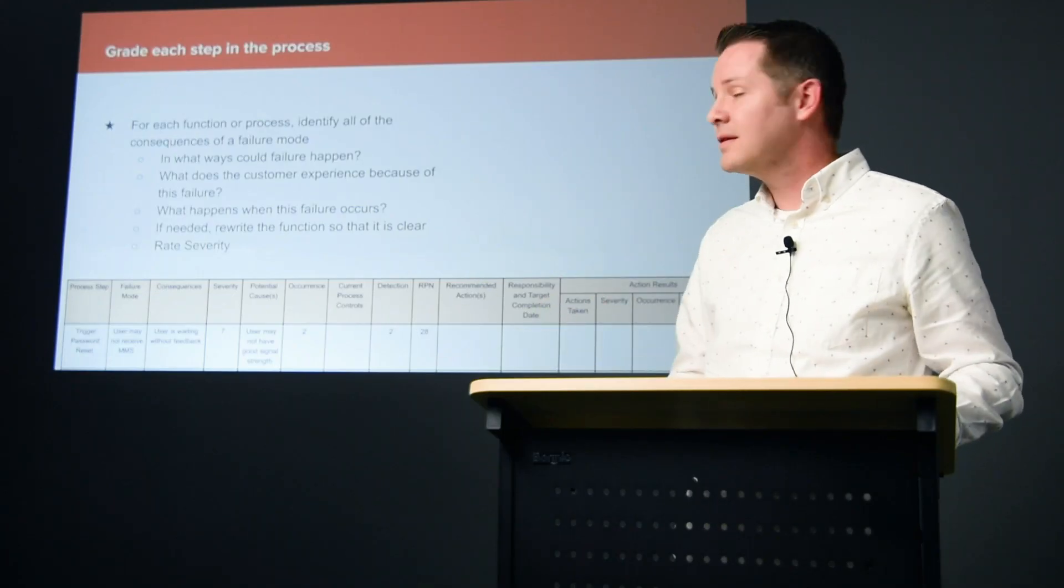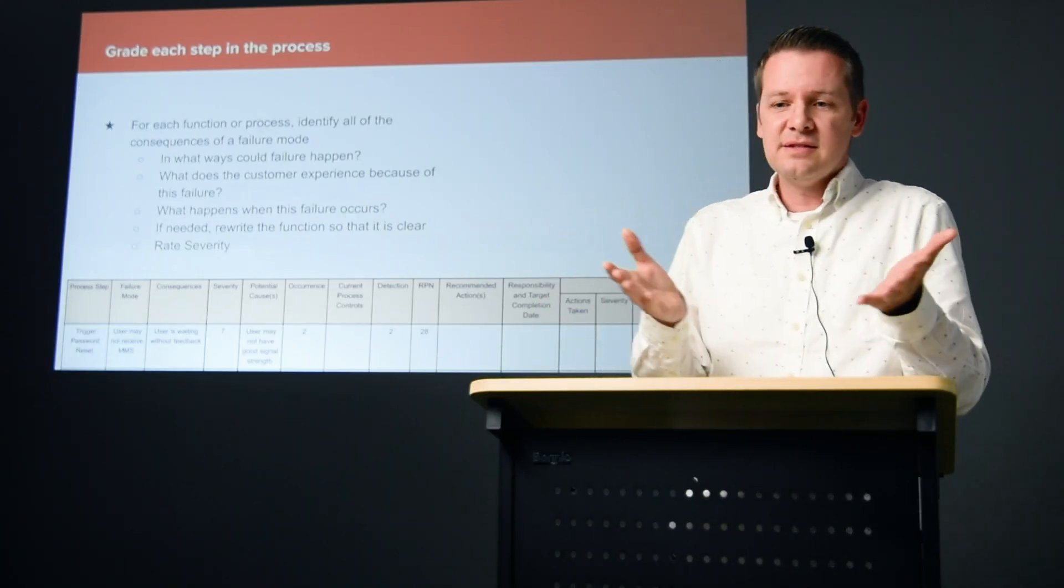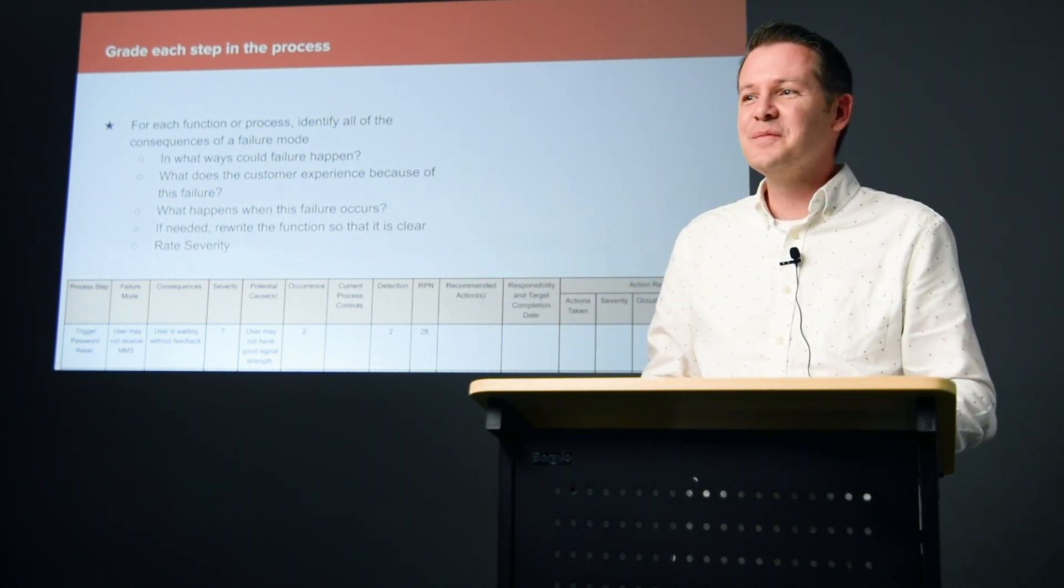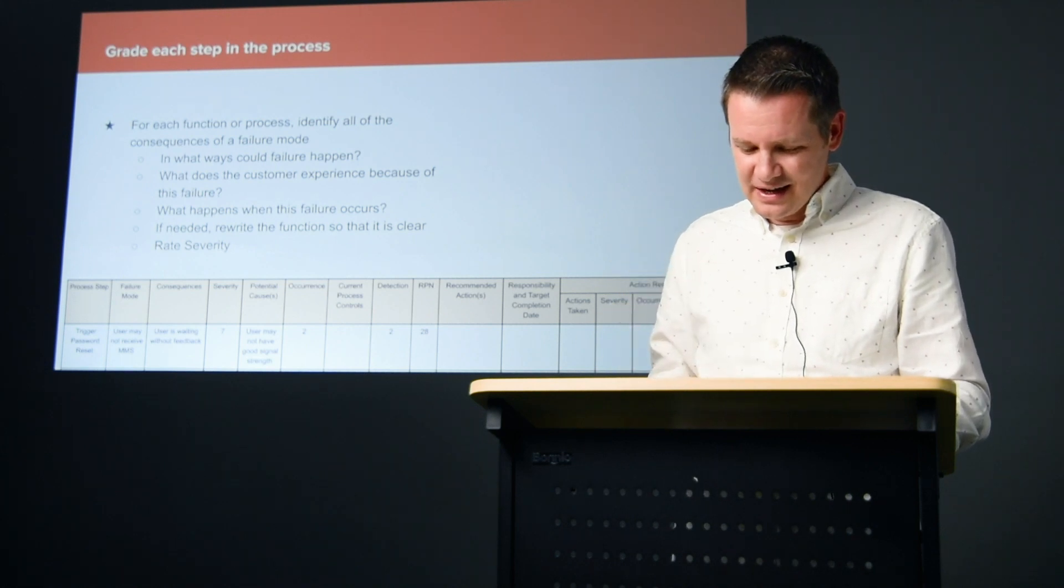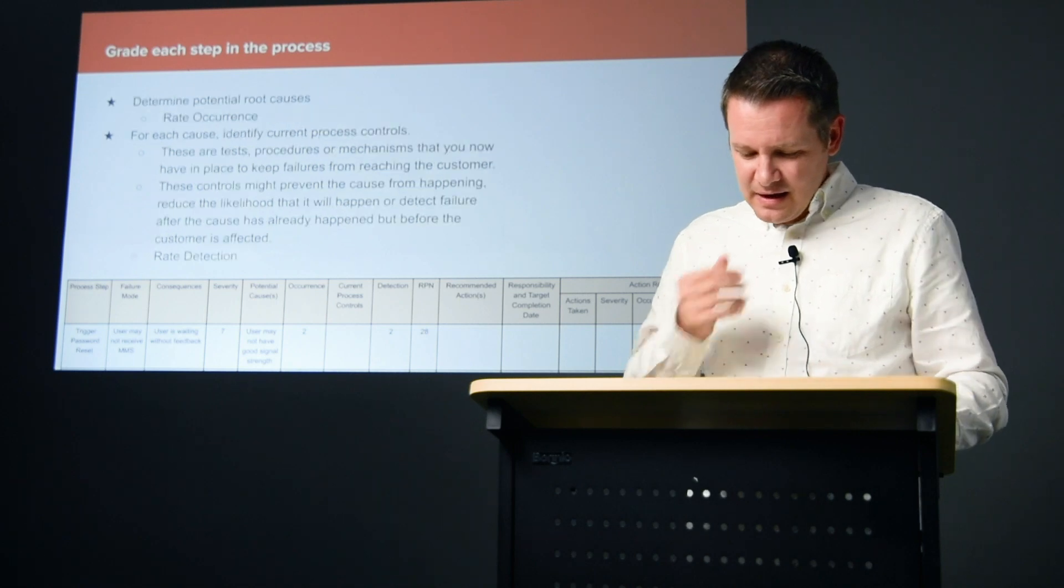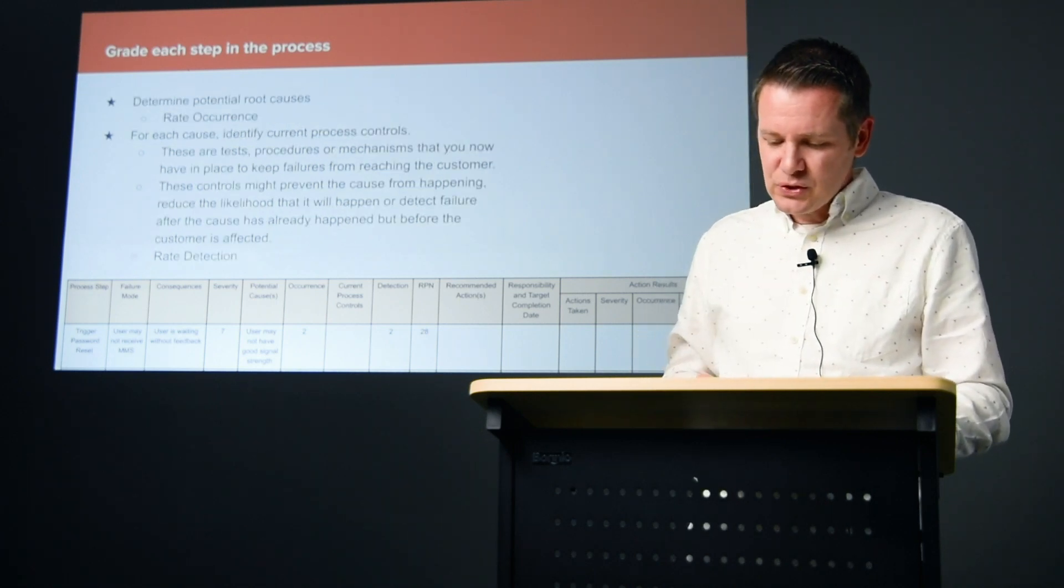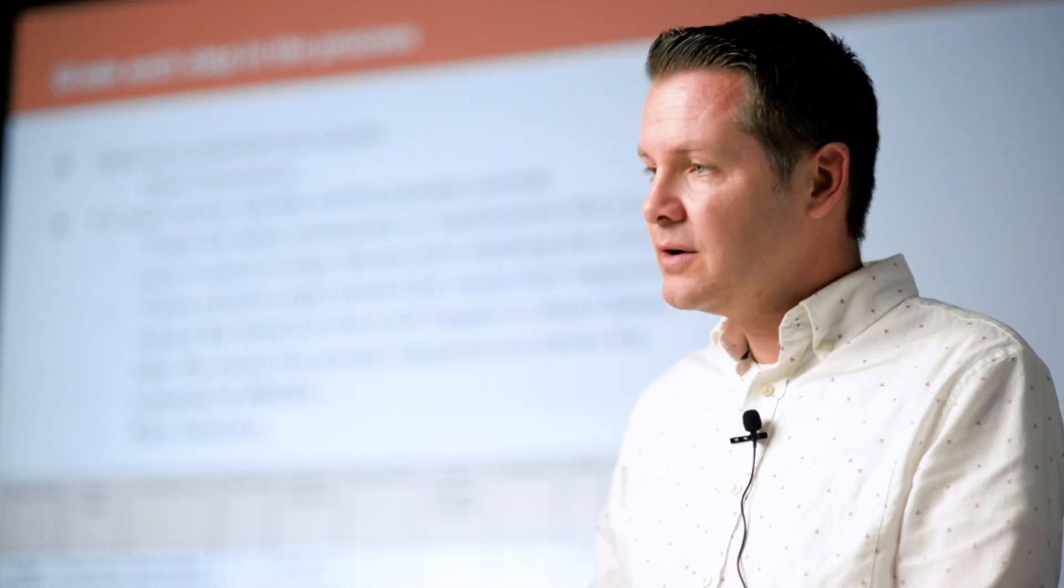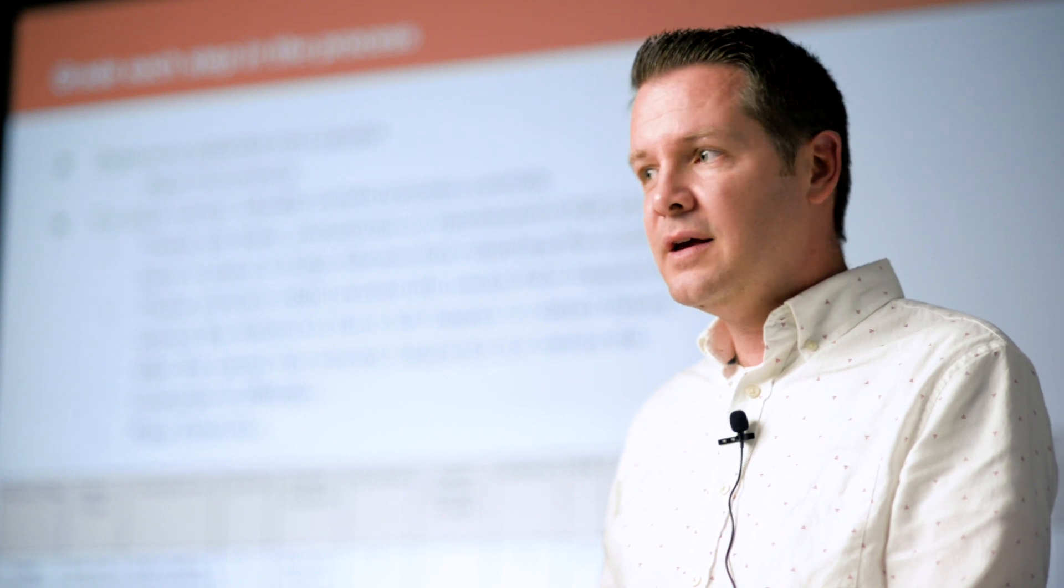What does the customer experience because of a failure? What happens when the failure occurs? If needed, we rewrite things so it's clearer to understand what we're trying to rate. Then we rate the severity, and the rating is internal—a seven is a seven according to how the team feels about it. Then we determine the potential root causes, talking about how something could happen and rating the occurrence.